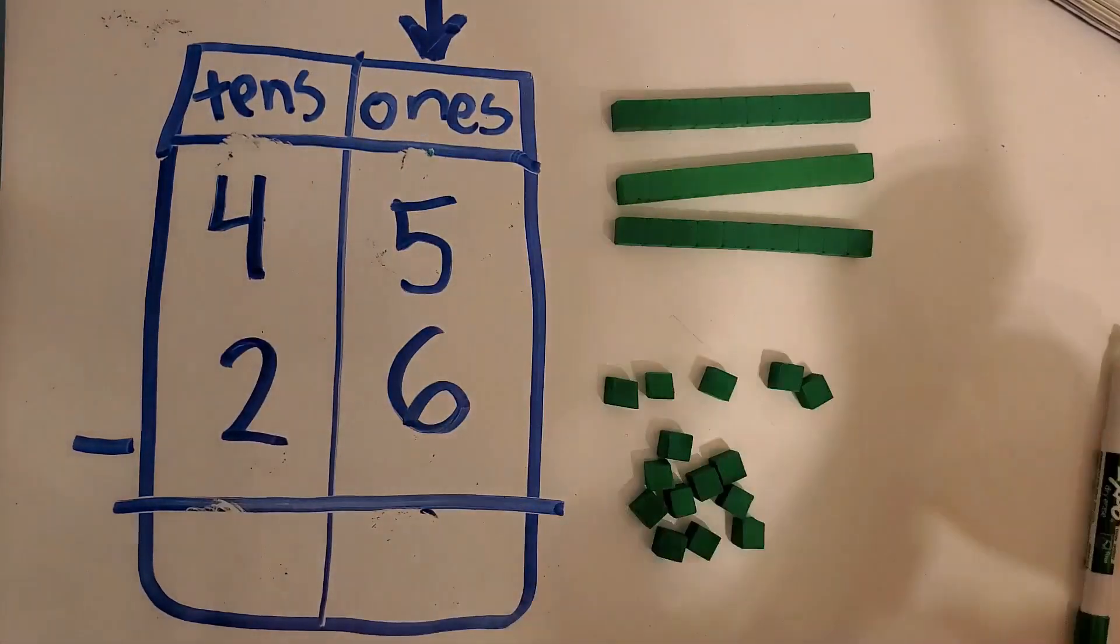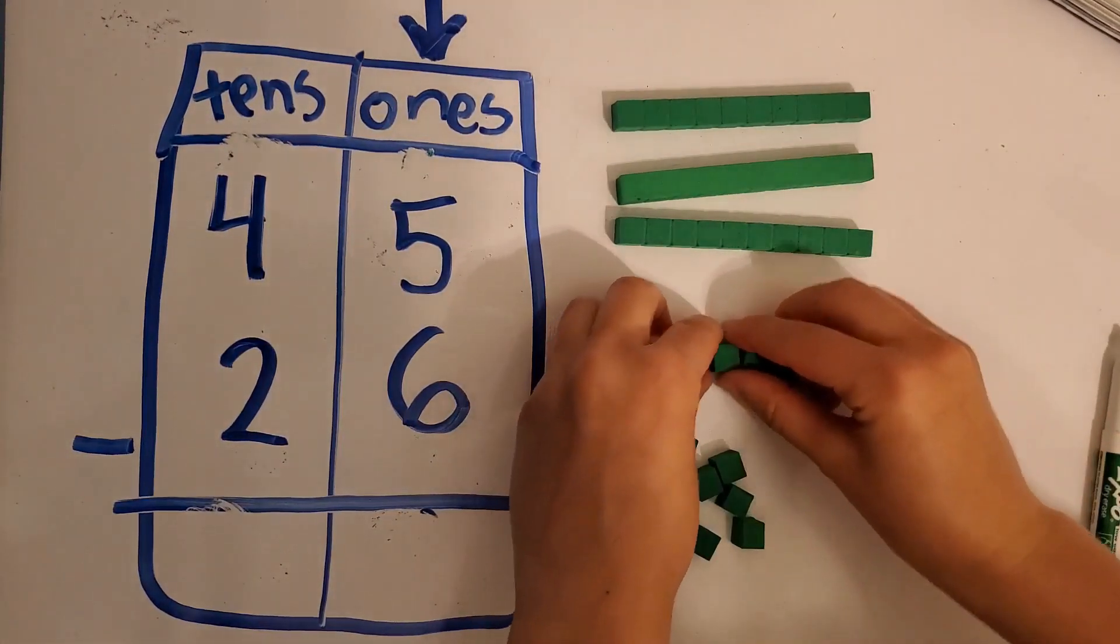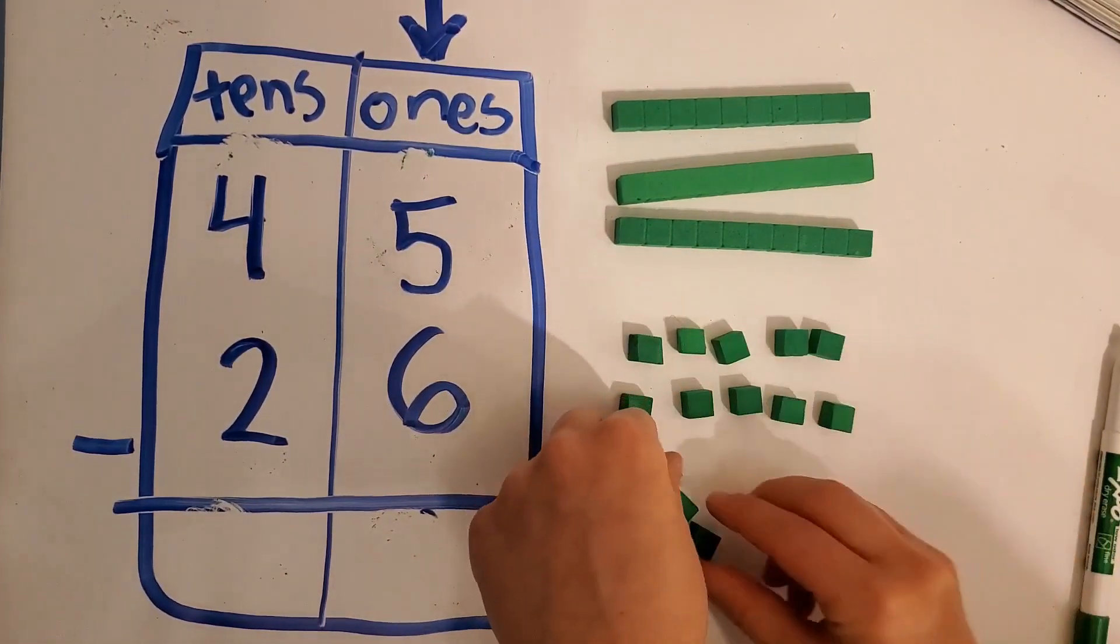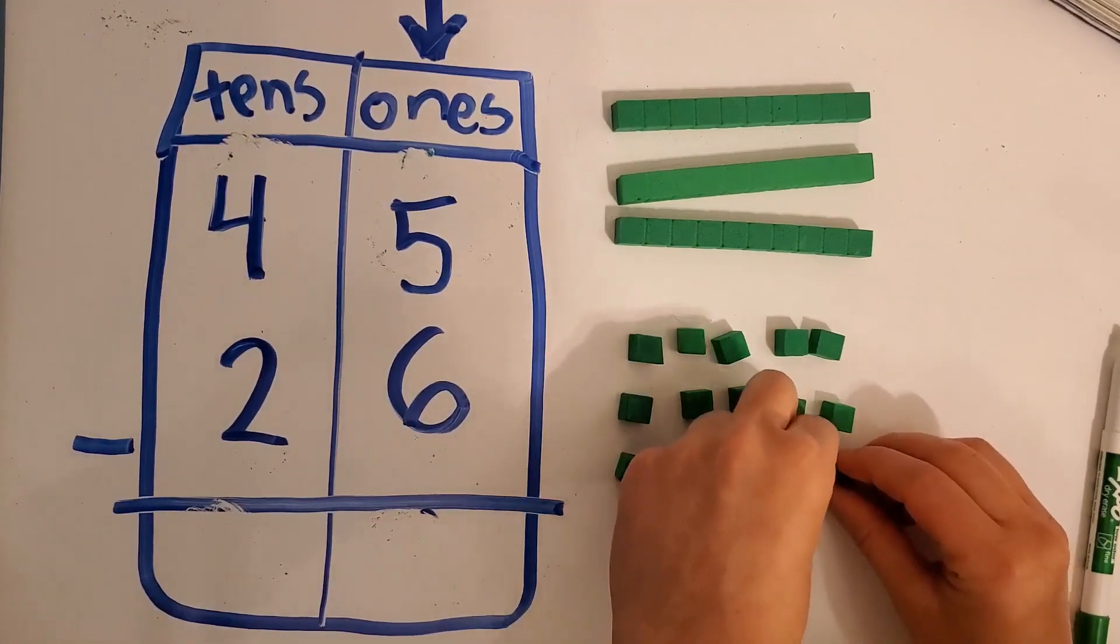Here we go. I'm going to put that one there. I'm going to take this one away. And one, two, three, four, five, six, seven, eight, nine, ten, eleven, twelve, thirteen, fourteen, fifteen. So we have fifteen ones now.